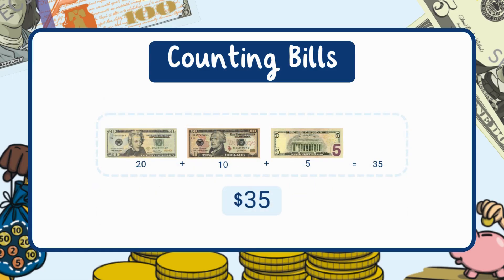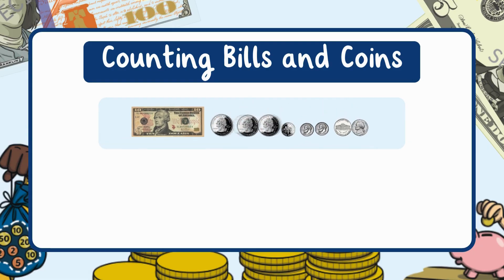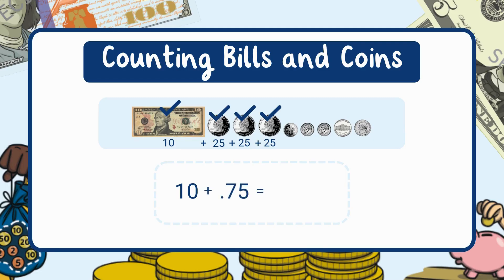Now let's try adding bills and coins. We have a ten dollar bill and some coins. First we arrange the money from largest to smallest, starting with the ten dollar bill — so far we have ten dollars. We can group the same coins together to make counting easier. We have three quarters: 25 plus 25 plus 25 equals 75 cents.